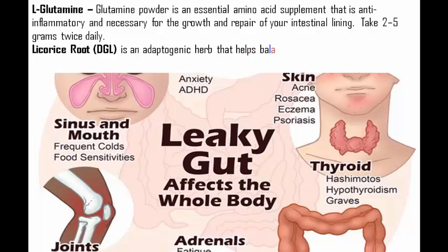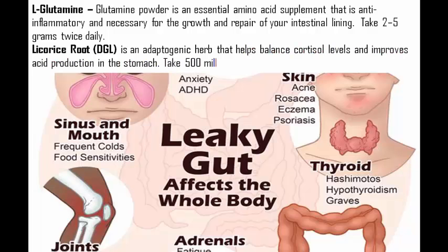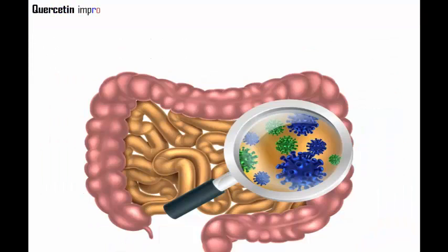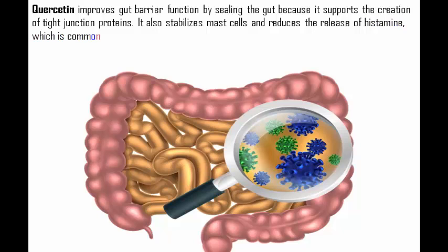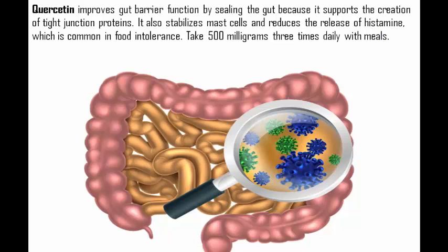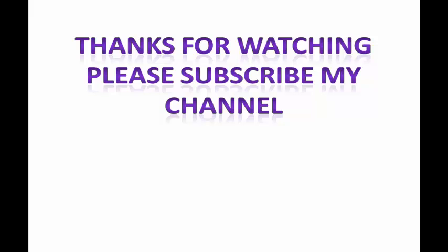Four: licorice root DGL — it is an adaptogenic herb that helps balance cortisol levels and improves acid production in the stomach. Take 500 milligrams twice daily. Five: quercetin — it improves gut barrier function by sealing the gut, supports the creation of tight junction proteins, stabilizes mast cells, and reduces the release of histamine, which is common in food intolerance. Take 500 milligrams three times daily with meals.